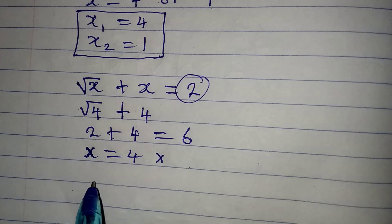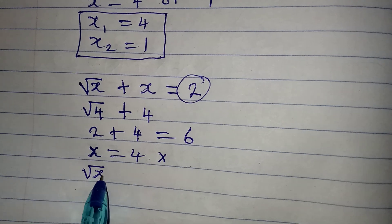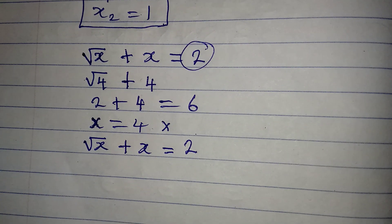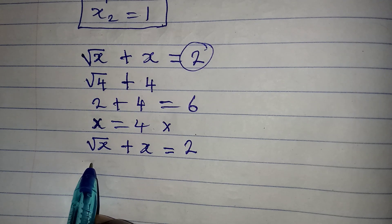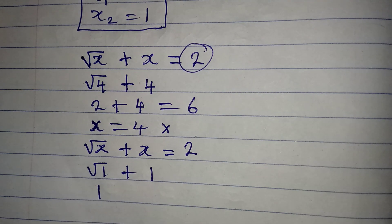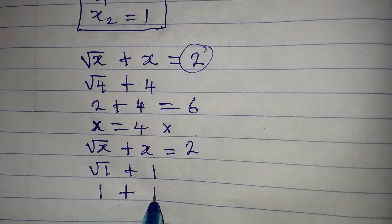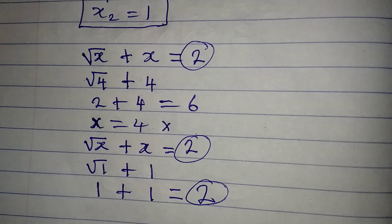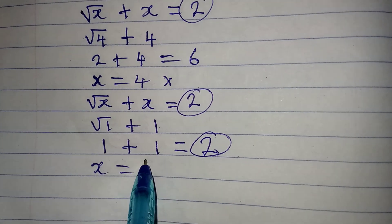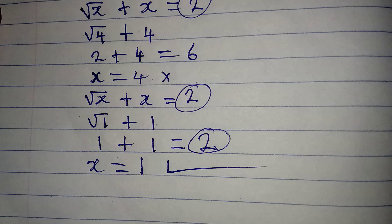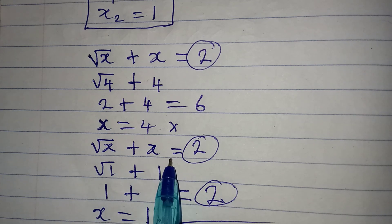Now let's try x equals 1 in the equation square root of x plus x equals 2. Substituting: square root of 1 plus 1 equals 1 plus 1 equals 2, which matches. So x equals 1 satisfies the equation, and it is the only solution to square root of x plus x equals 2.